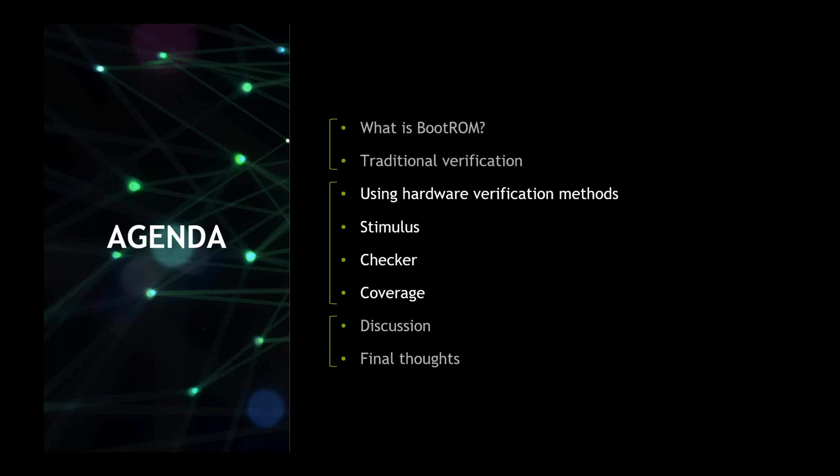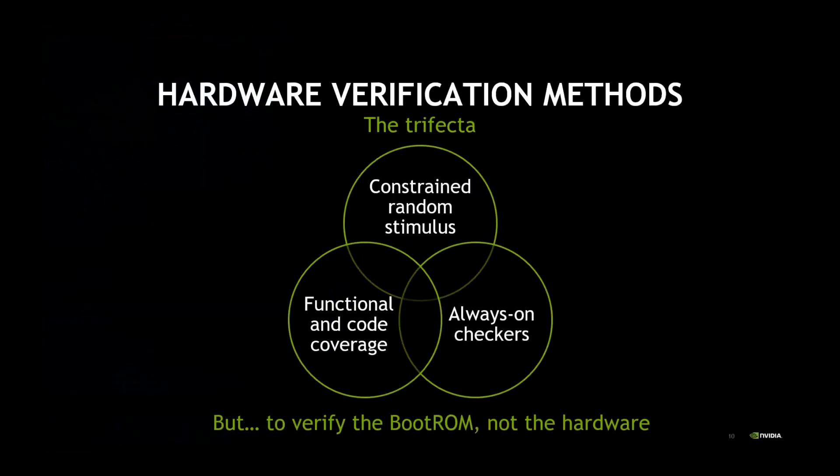The hardware verification methods we used are the trifecta of constrained random stimulus, always-on checkers, and functional coverage — but this time for verifying the boot ROM and not the hardware. Let's dive into them one by one.